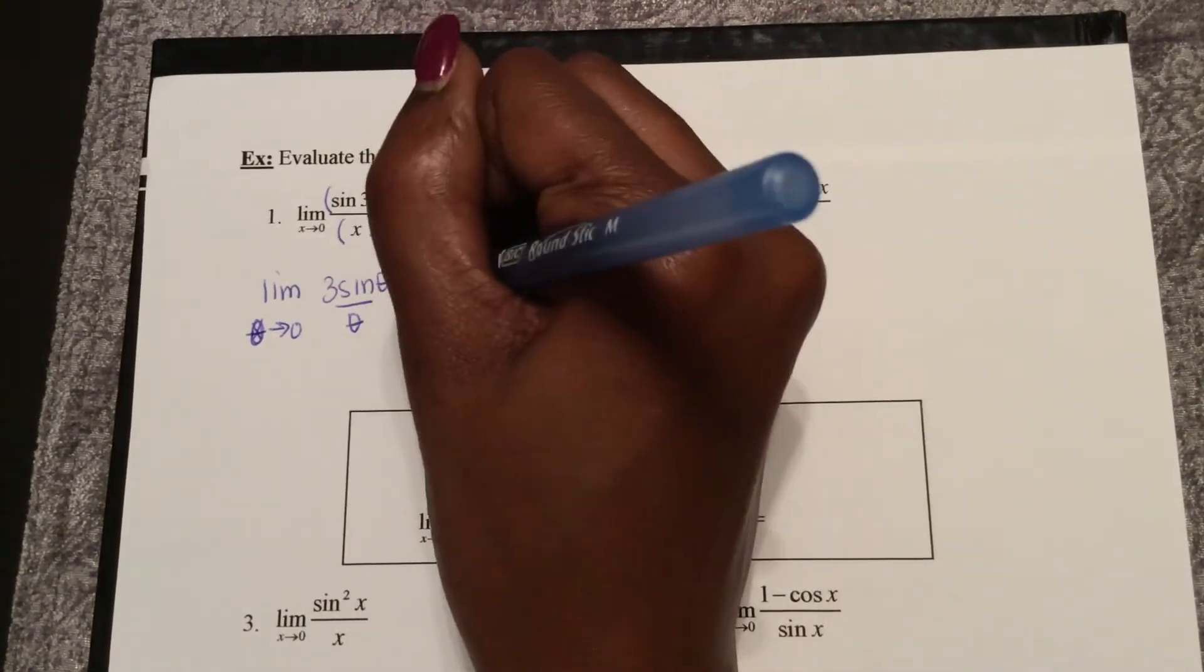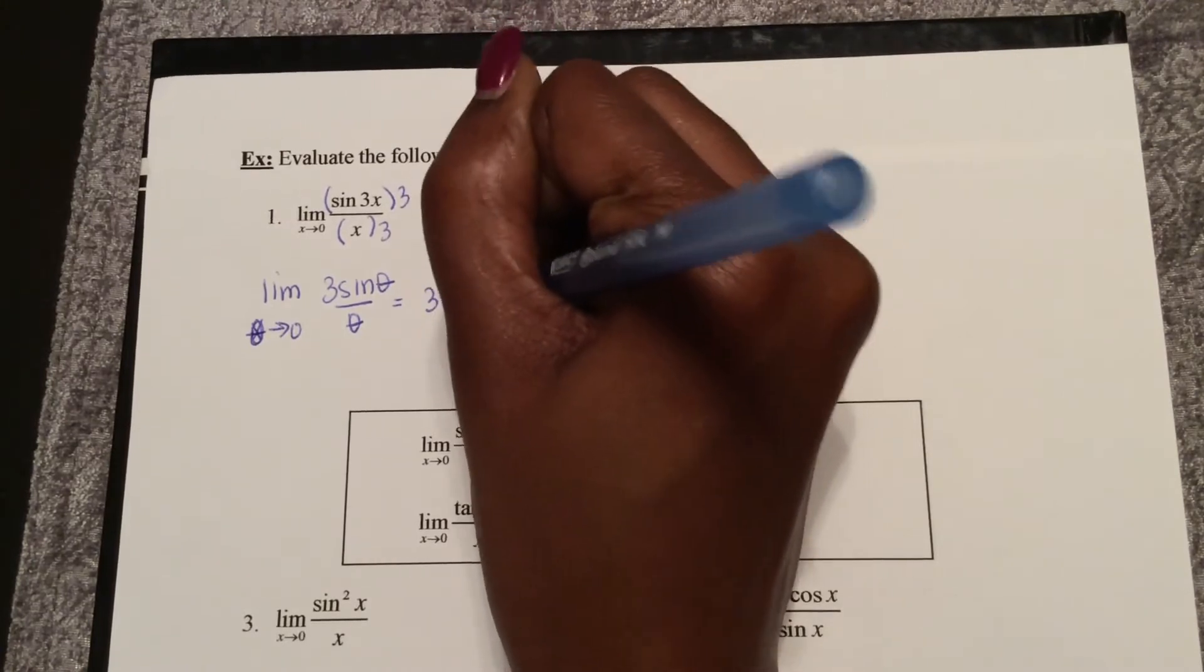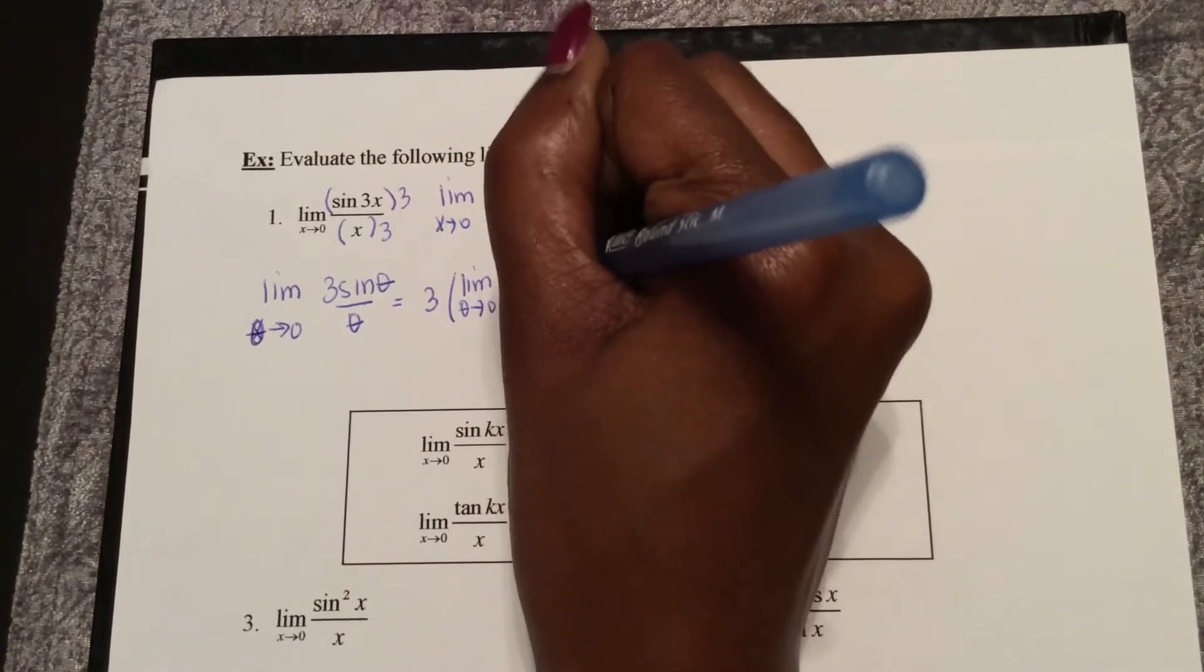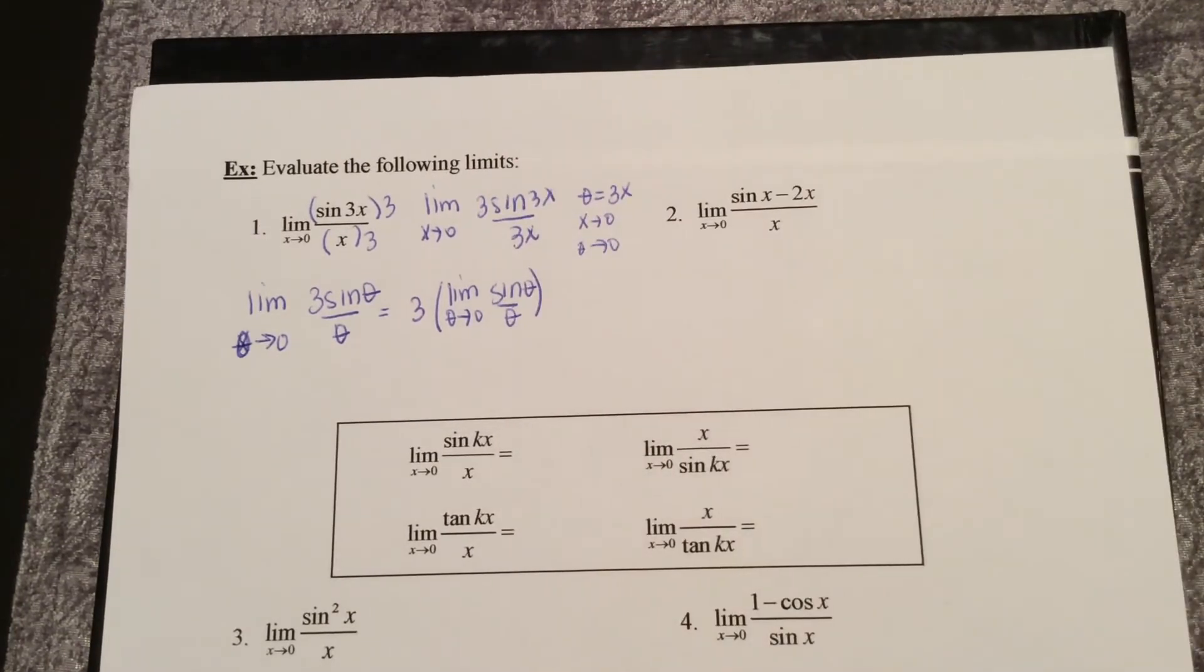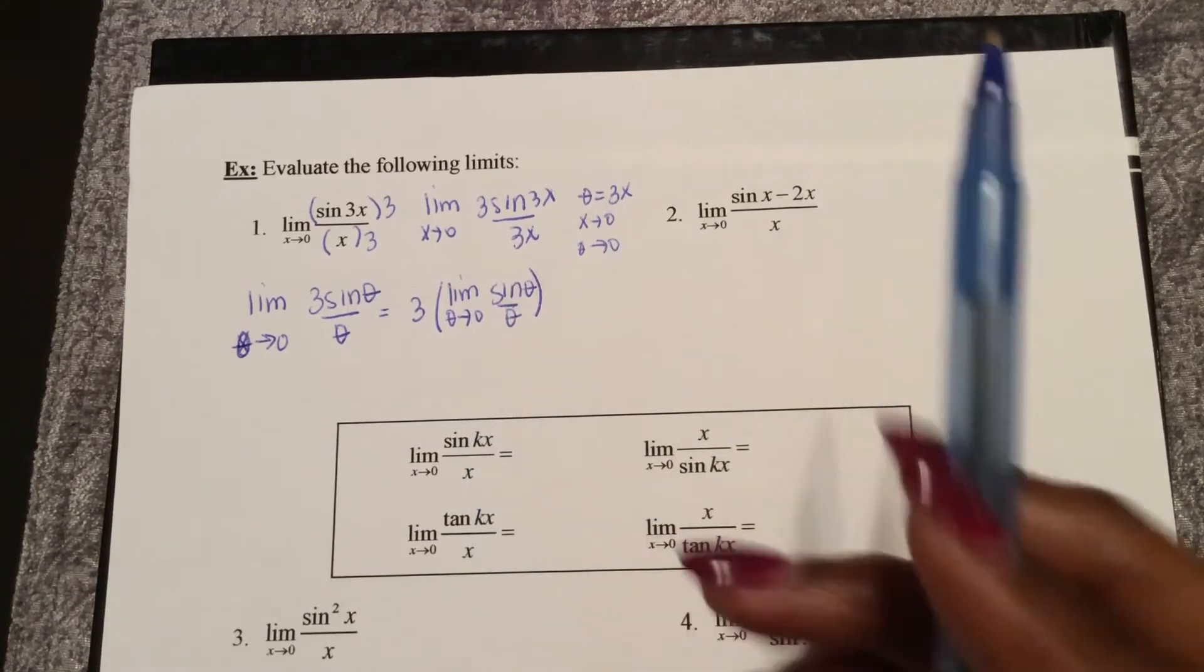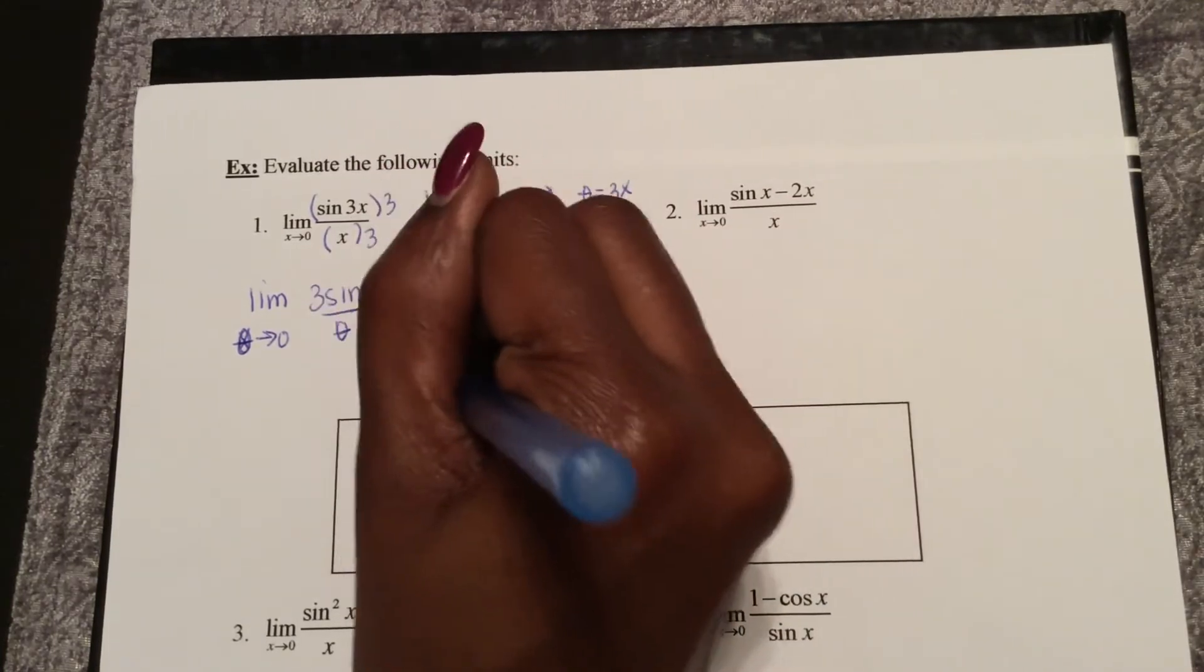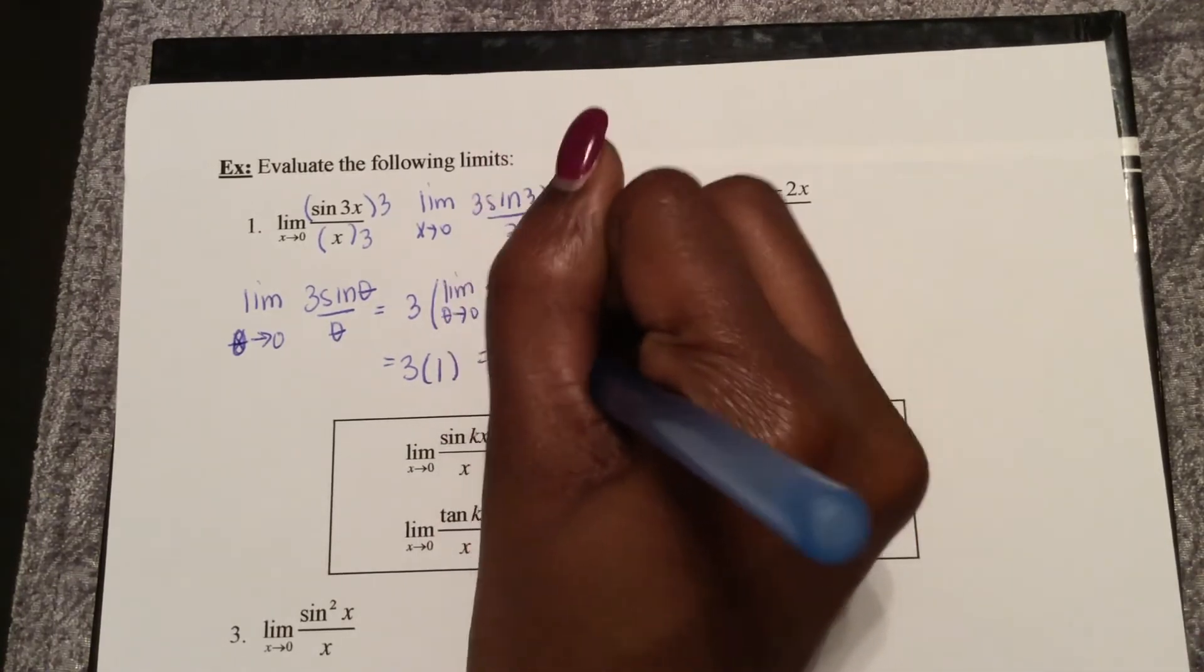So this becomes the limit as theta approaches 0 of 3 sine theta over theta. So that's the same as 3 times the limit as theta approaches 0 of sine theta over theta. We know that the limit as theta approaches 0 of sine theta over theta is 1, and 3 times 1 is 3.